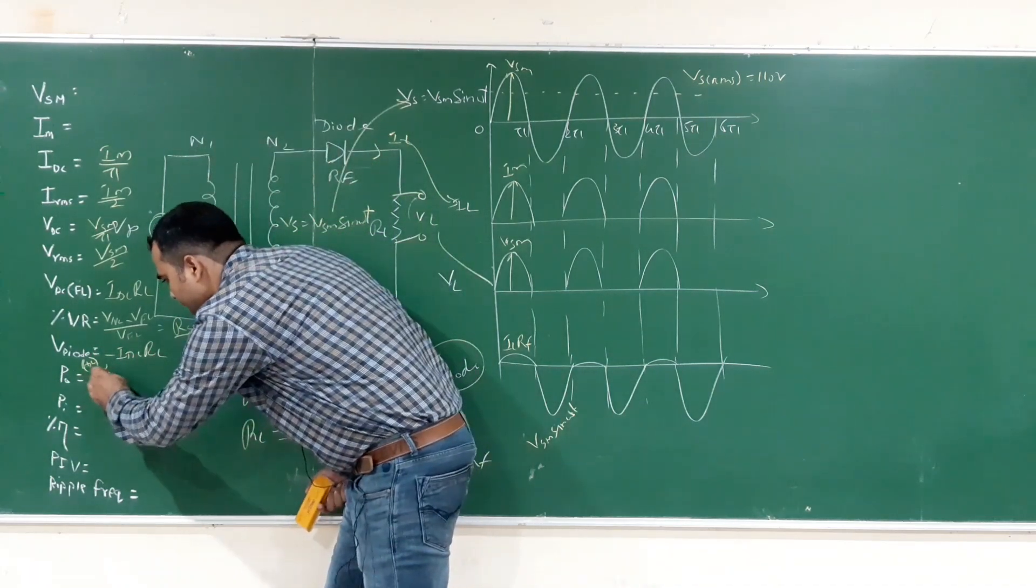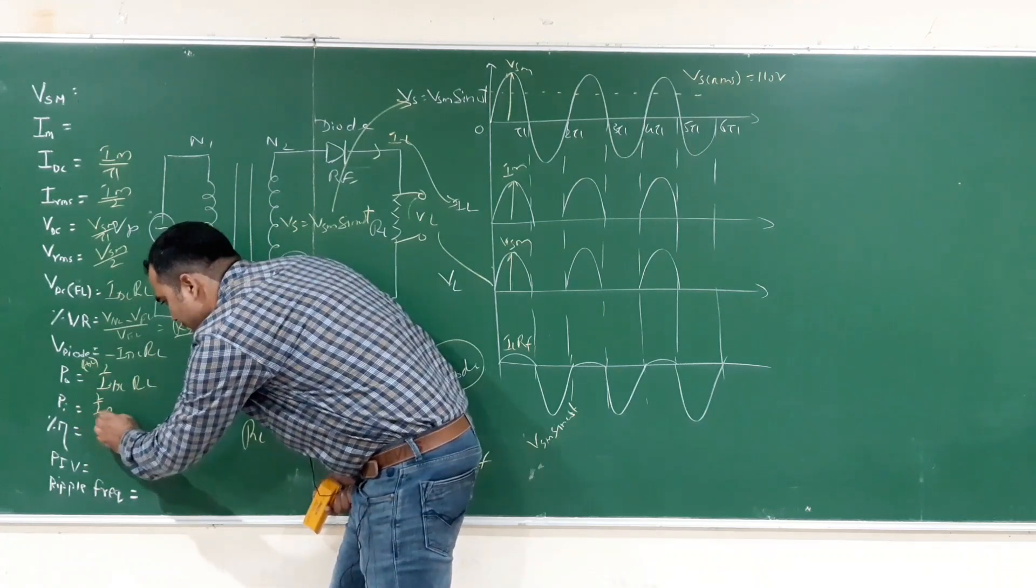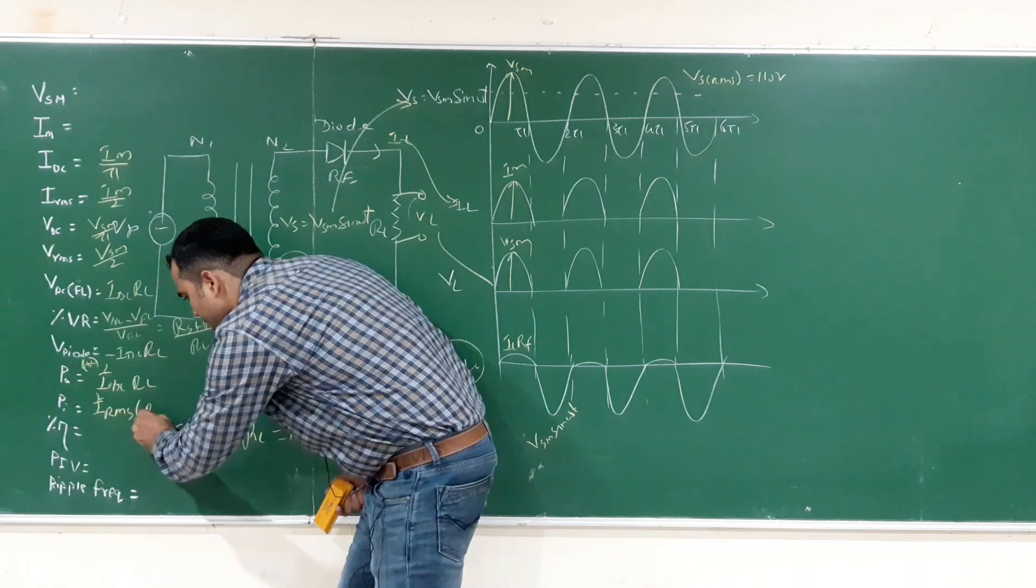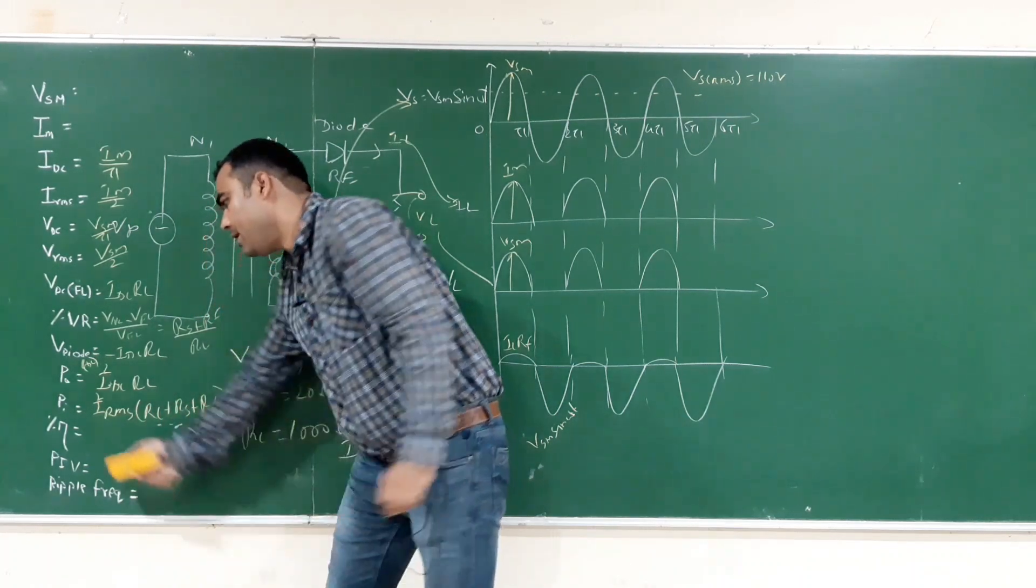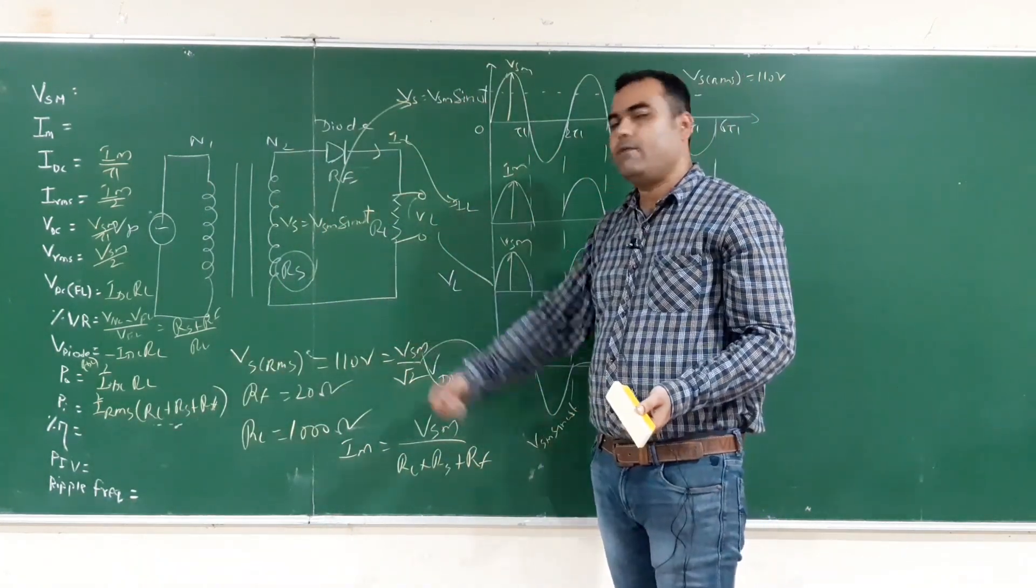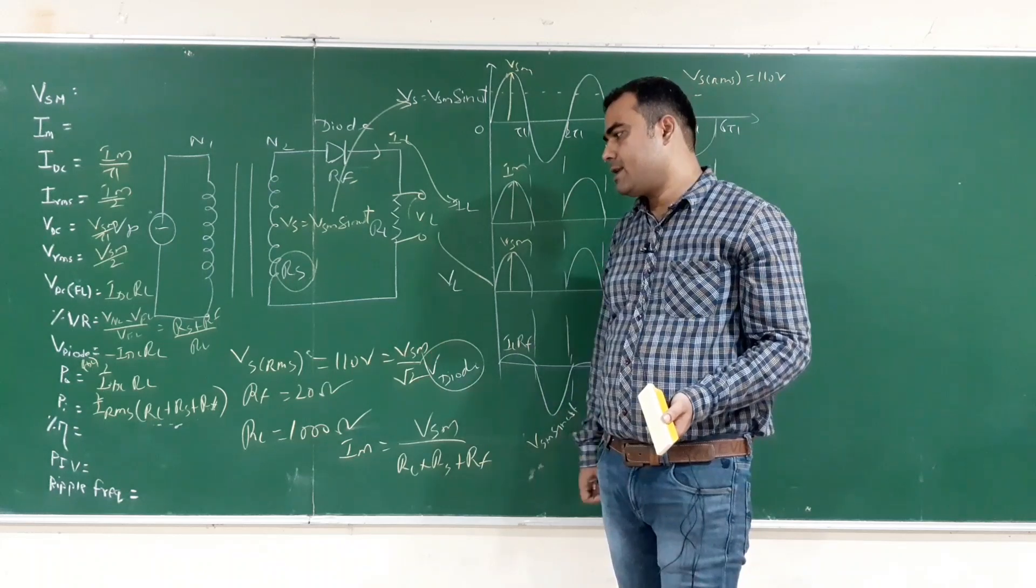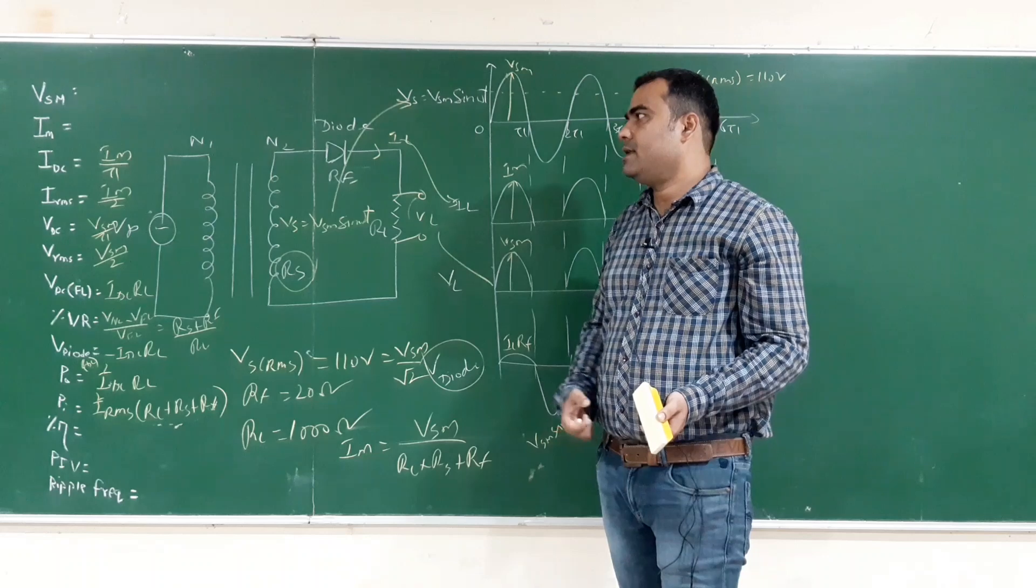Output power is I square DC into RL. Input power is I square RMS into RL plus RS plus RF. Similarly, output by input is efficiency. Peak inverse voltage PIV equals to VSM. And ripple frequency is same as applied frequency. You calculate it. After that I will tell you the answer.